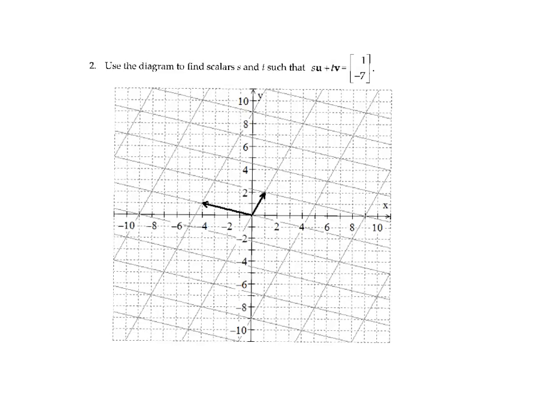So first I'm going to draw that vector 1 negative 7 that we hope to obtain. And so that would be the vector from the origin here to the point positive 1 negative 7. So that's down here. x is 1, y is negative 7. So that's this vector here.